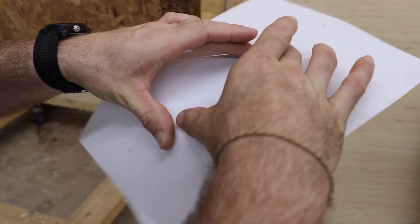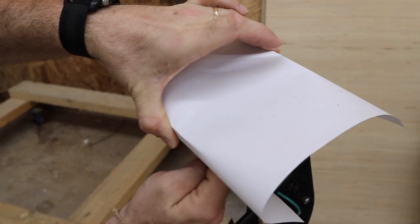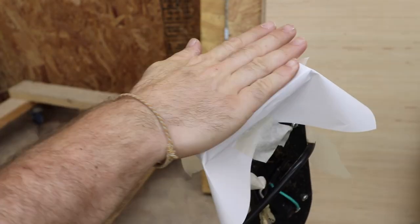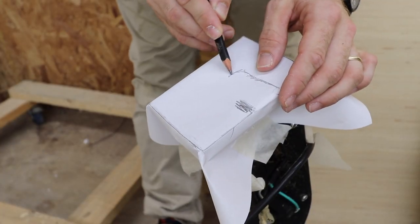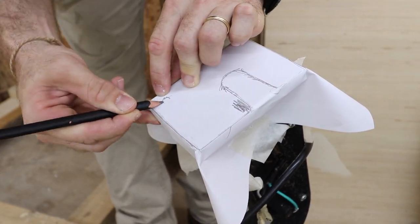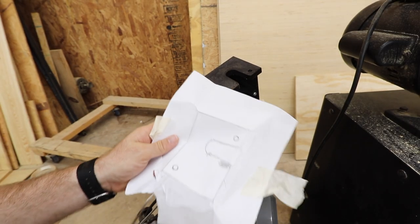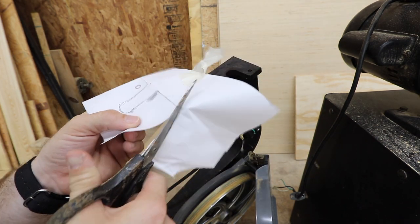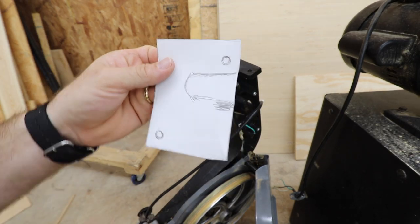All right, so we're just going to put a piece of paper over this, kind of fold it, tape it to our top. Now I'm just going to take my scissors and cut this out. All right, there's our little template so we can mark our holes.